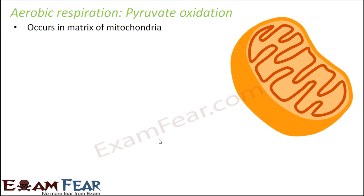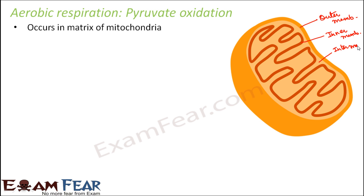This occurs in the matrix of mitochondria. Now, mitochondria has an outer membrane — it is a double membrane structure. This is the inner membrane. The folded membrane is the inner membrane, and the space between the two membranes is the intermembrane space. The fluid-like structure inside the inner membrane is the matrix.